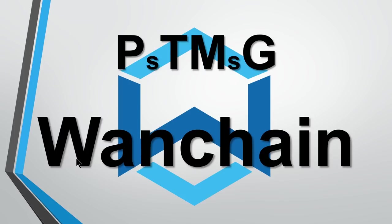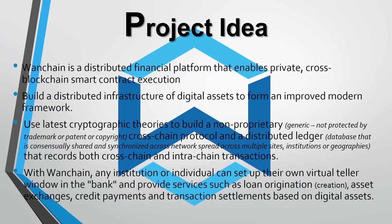Today's analysis is on the ICO Wanchain. Wanchain wants to be a distributed financial platform that enables private cross-blockchain smart contract execution by building a distributed infrastructure of digital assets to form an improved modern framework using the latest cryptographic theories to build a non-proprietary cross-chain protocol and a distributed ledger that records both cross-chain and intra-chain transactions.